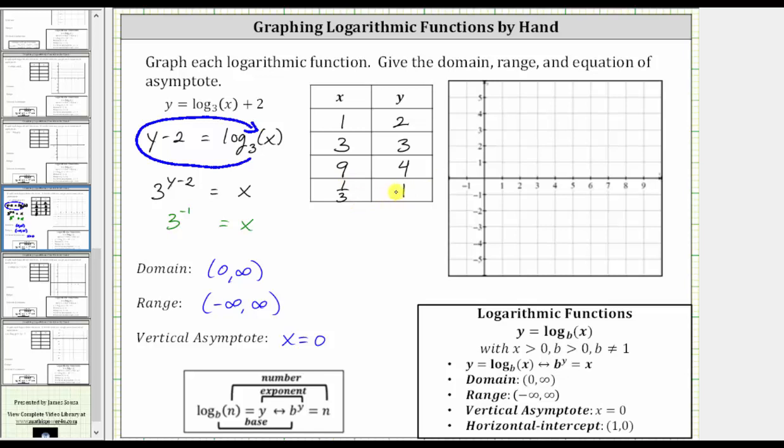Using these ordered pairs and knowing the vertical asymptote is x equals zero, we should be able to make a nice graph of the function. Let's first sketch the vertical asymptote of x equals zero, which is the y-axis.